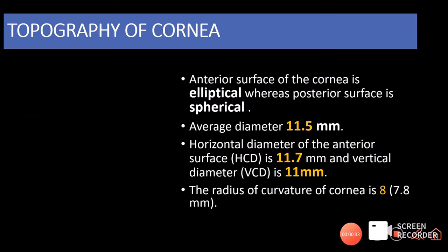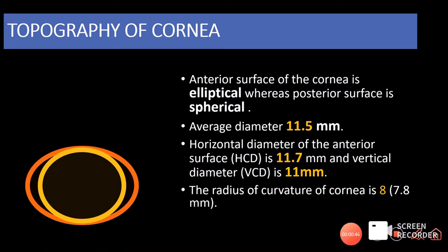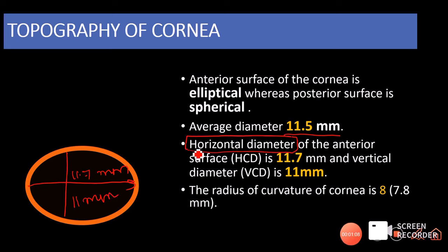Coming to the topography of the cornea, the anterior surface of the cornea is elliptical and the posterior surface is spherical. The average diameter of the cornea is about 11.5 mm, in which the horizontal diameter of the anterior surface is about 11.7 mm and the vertical diameter is about 11 mm. So the horizontal diameter is more compared to the vertical diameter.